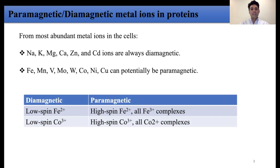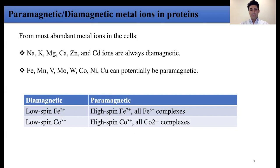Whereas the other metal ions listed can potentially be paramagnetic. A good example is iron and cobalt. Iron is the most abundant paramagnetic metal ion in proteins. The most common and stable oxidation states of iron are +2 and +3. Low spin iron(II) is diamagnetic in octahedral and square planar coordination, whereas high spin iron(II) and all iron(III) complexes are paramagnetic. Similarly for cobalt, low spin cobalt(III) is diamagnetic, and the rest — high spin cobalt and all cobalt(II) complexes — are paramagnetic.